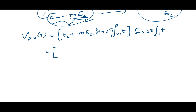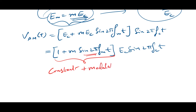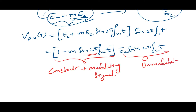Now let us rearrange this equation. Taking EC common from the bracket, this becomes EC · (1 + M sin(2π fm t)) · sin(2π fc t). If you notice, the term in the bracket is a constant plus the modulating signal. And this sin(2π fc t) factor here is the unmodulated carrier.